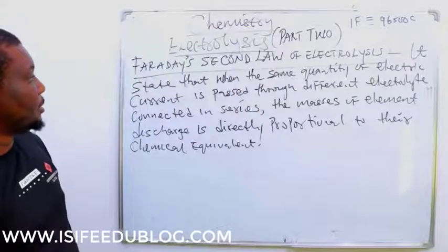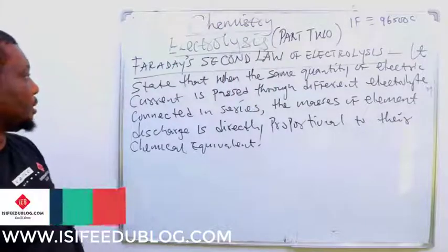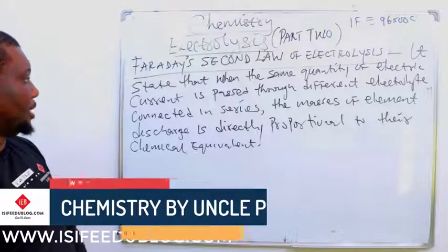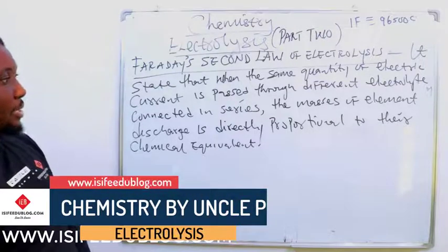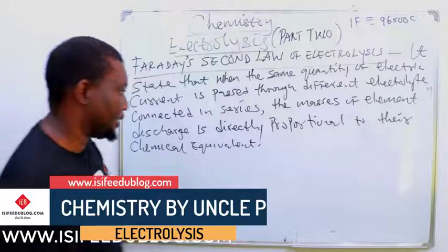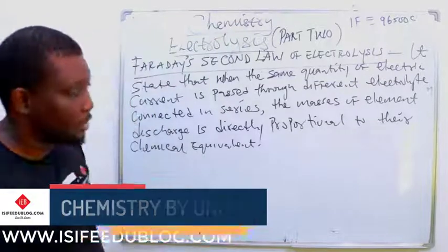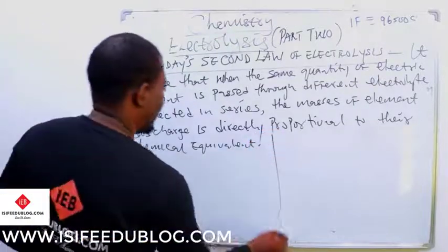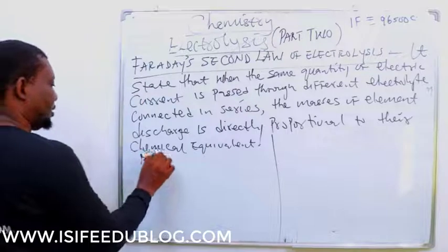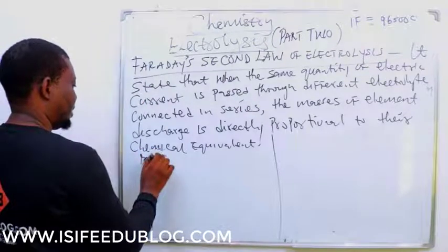The second part states that when the same quantity of electric current is passed through different electrolytes that are connected in a series, the mass of each element discharged is directly proportional to their chemical equivalents.